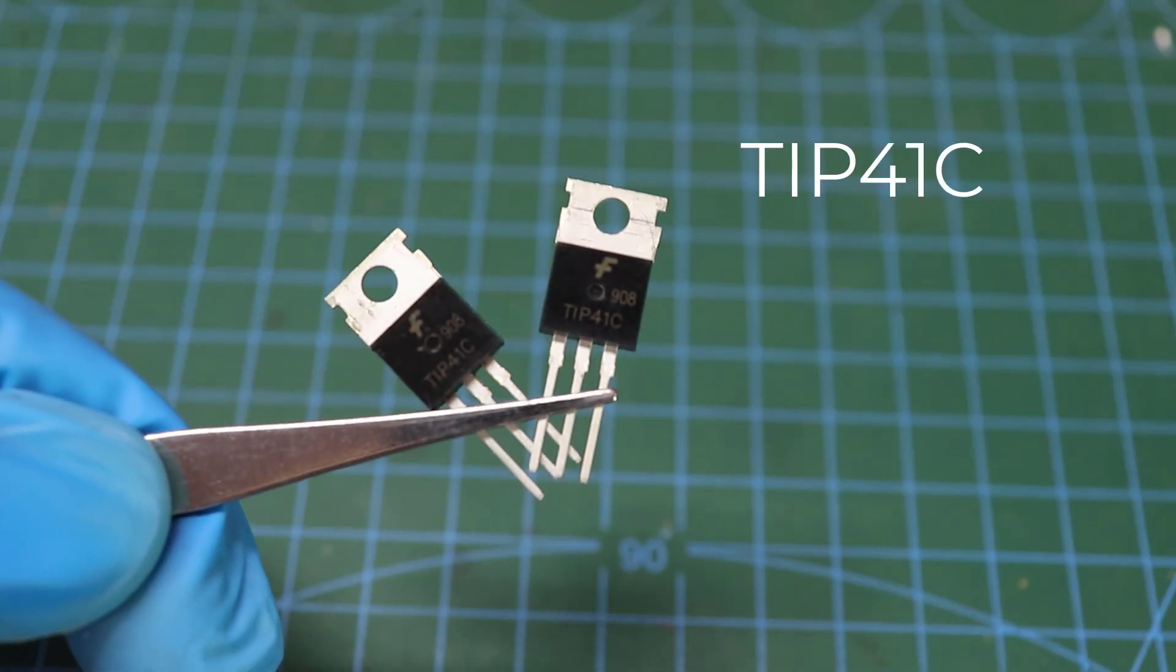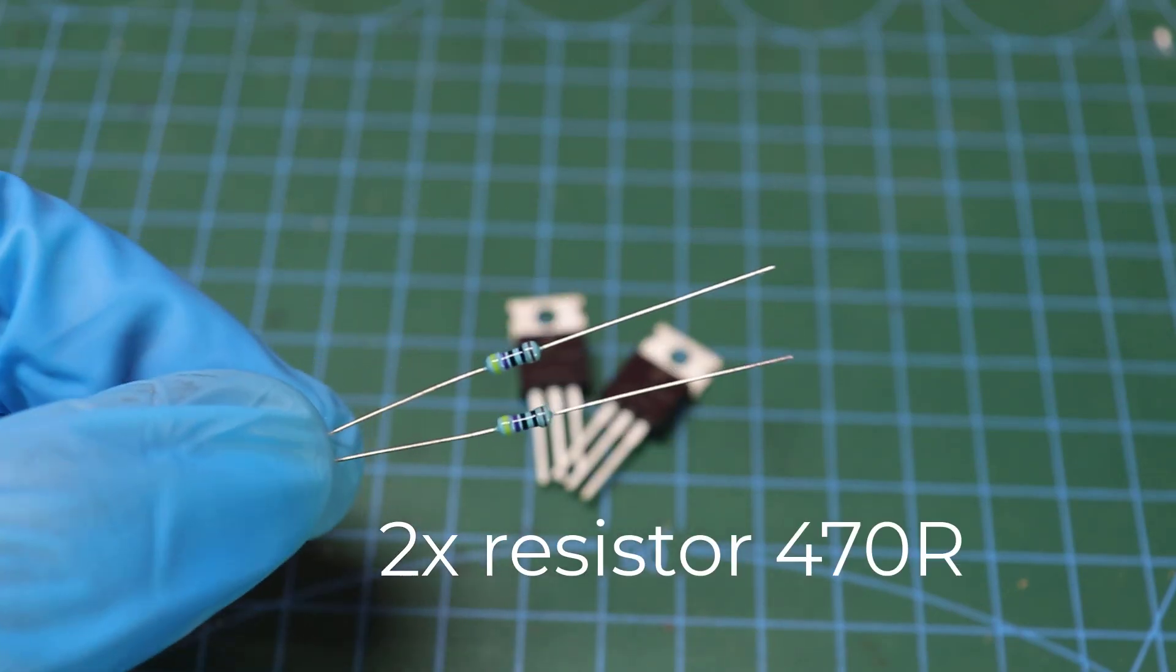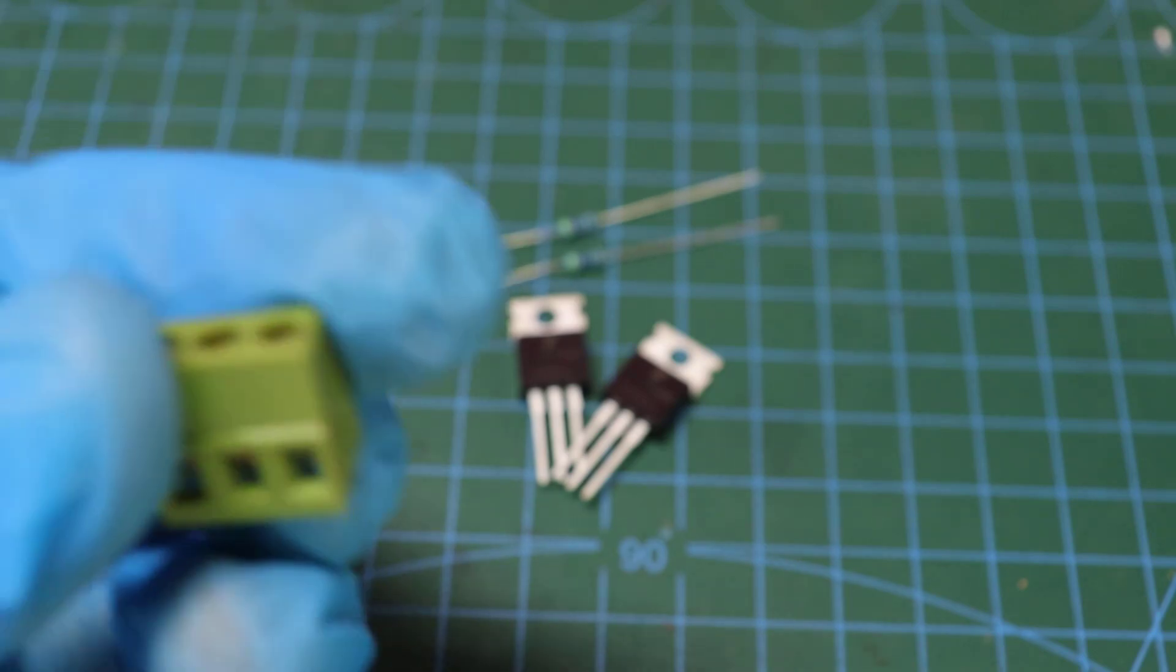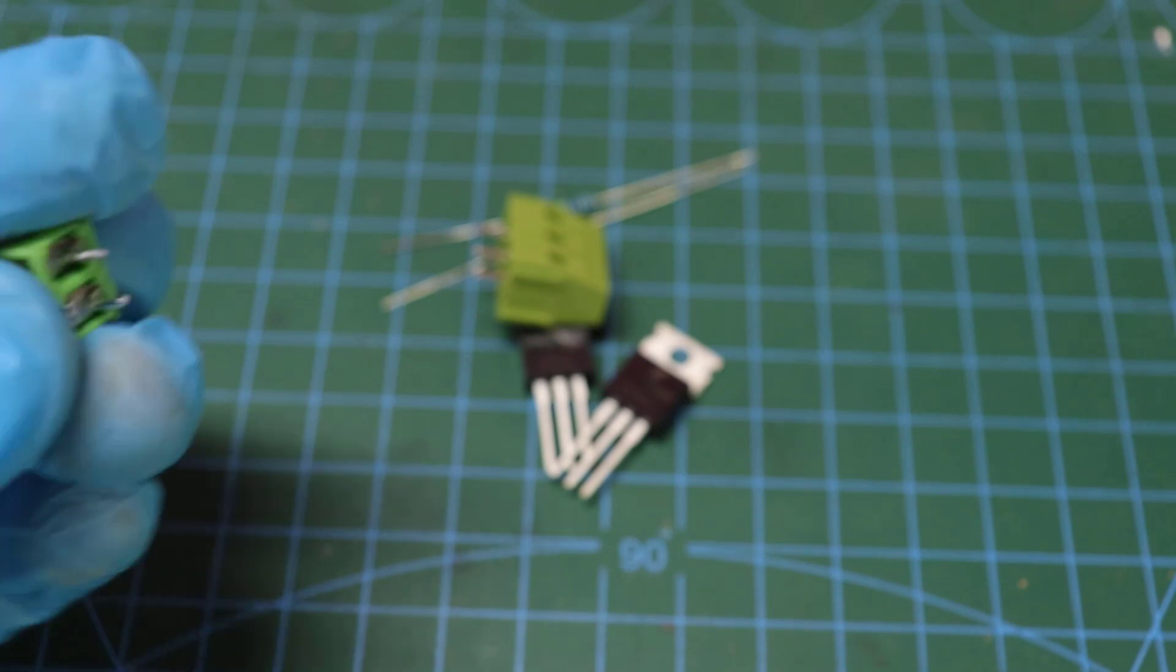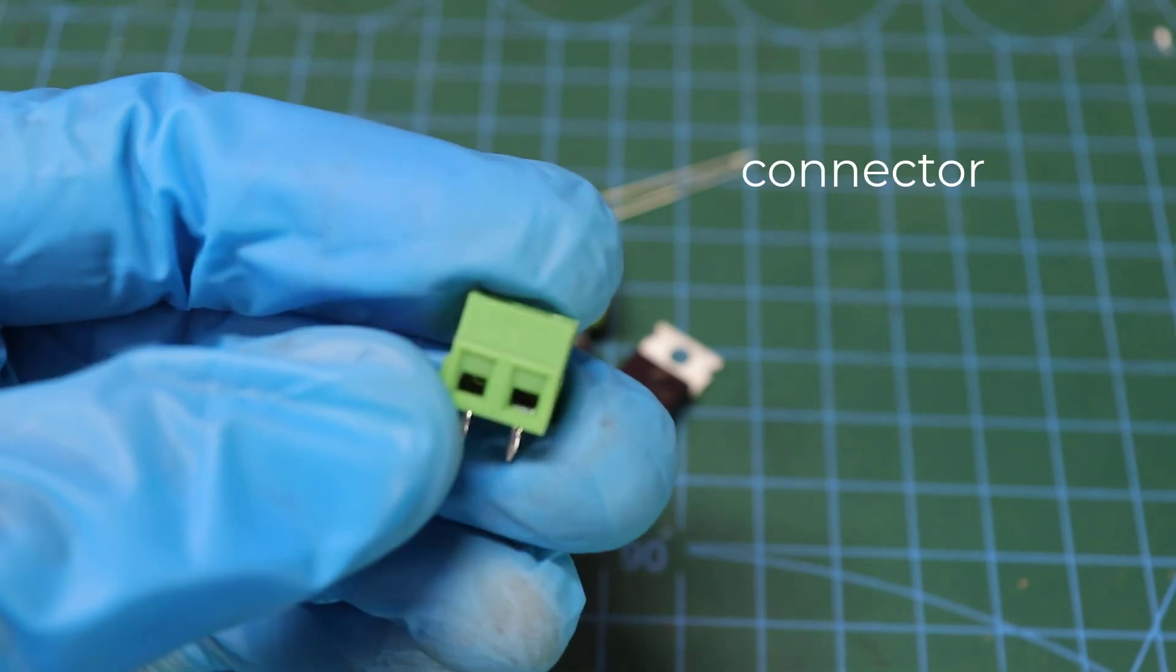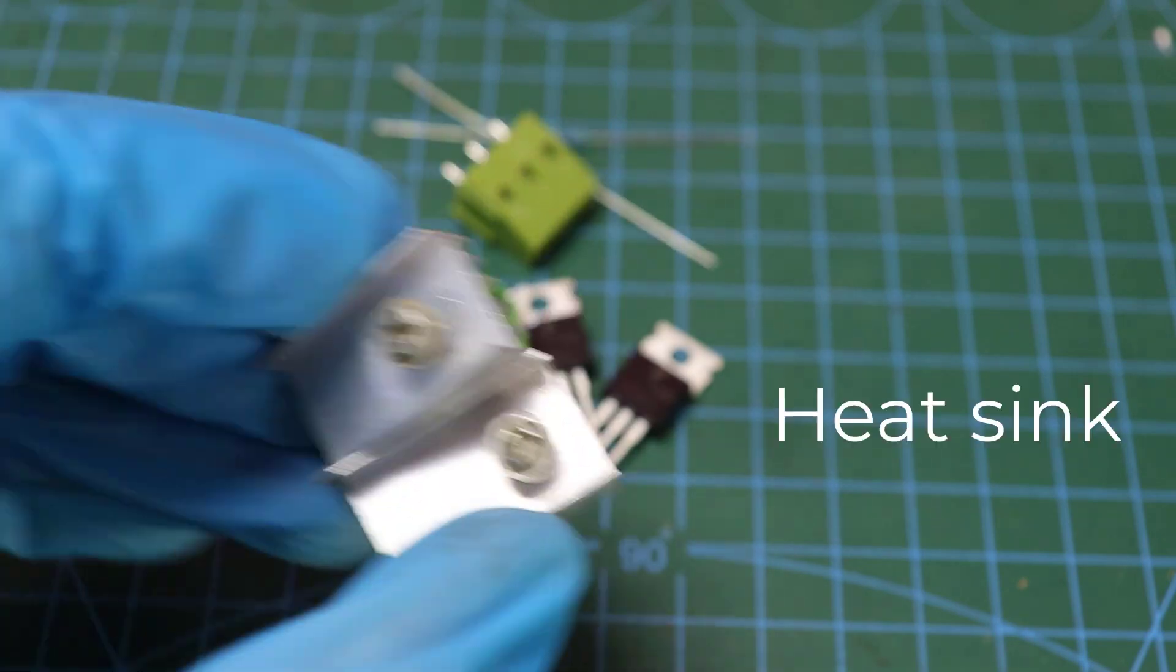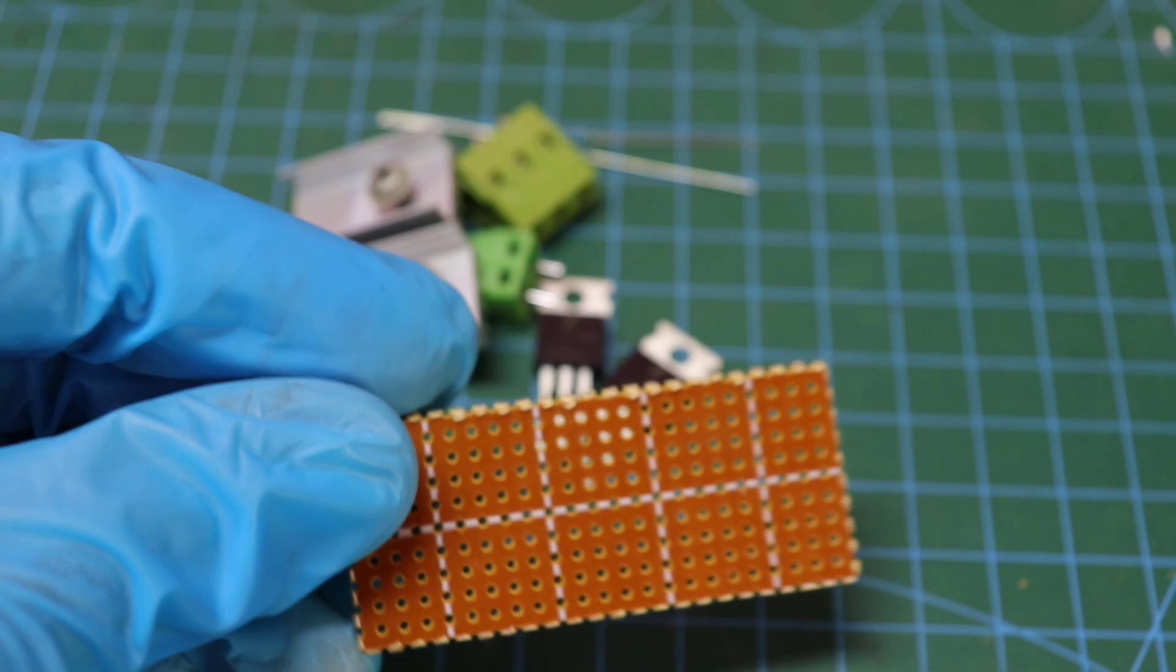You'll need an NPN transistor TIP41, two resistors 470 ohms, a PCB terminal block 3 pins, a PCB terminal block 2 pins, a heat sink, and PCB point.